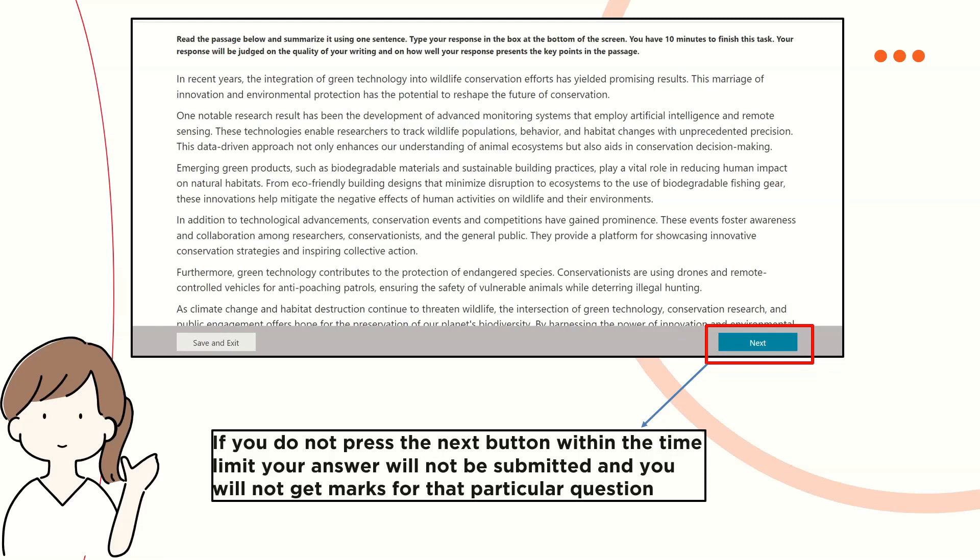Similarly, in case of the writing section, as you know for summarize written text time limit is 10 minutes and for write essay time limit is 20 minutes.